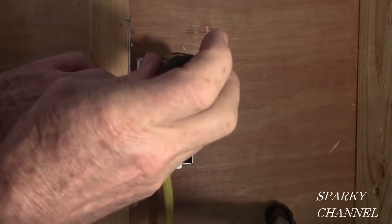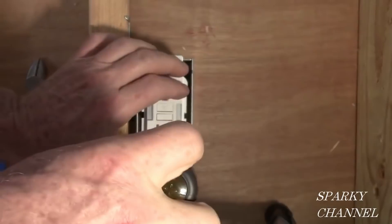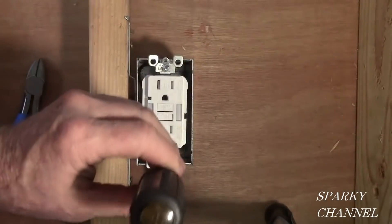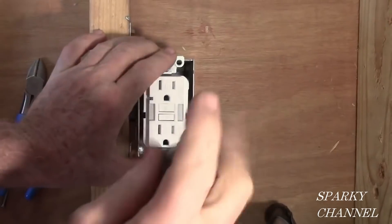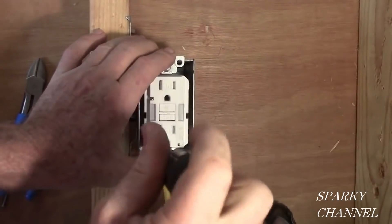Now, with the receptacle right in the middle of the box, tighten it down so the yoke is touching - the yoke of the receptacle, that's this part - is very well connected to the metal box.